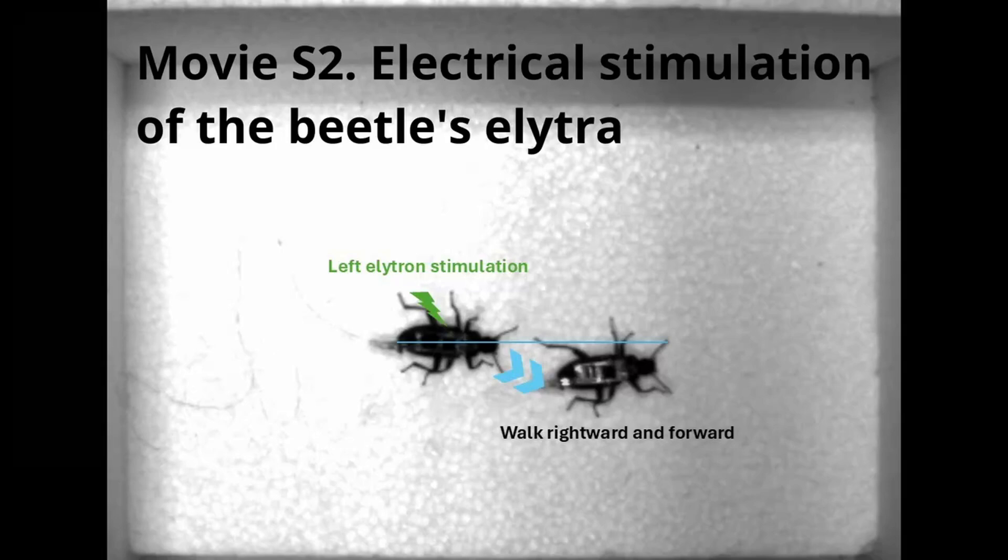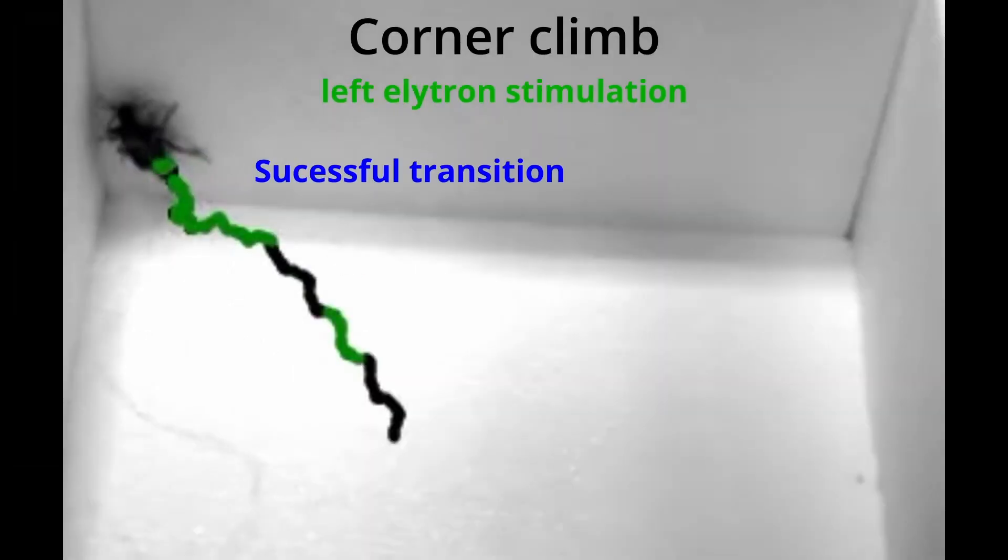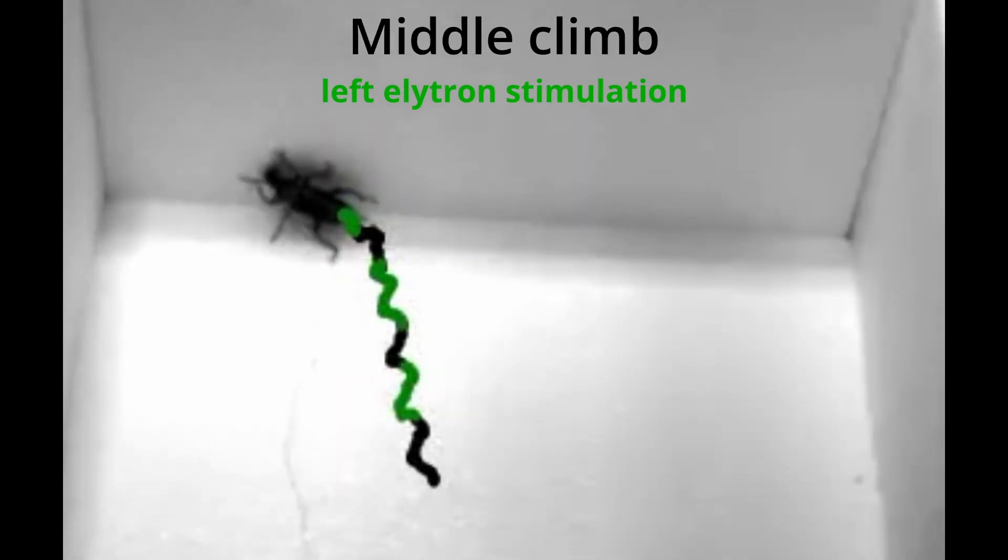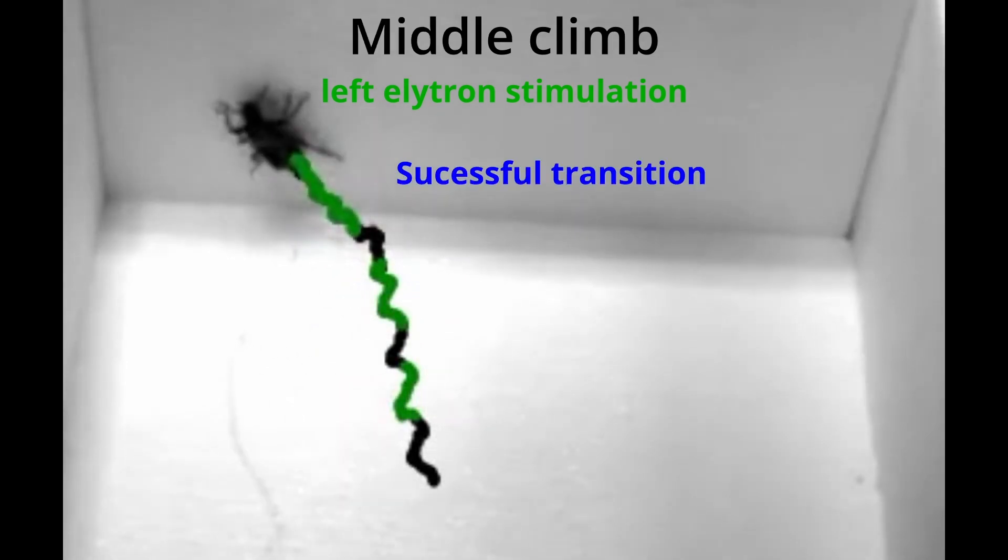That means in the future, a swarm of cyborg insects could scout disaster sites, locate trapped individuals within hours instead of days, and relay crucial visual information back to teams above ground.